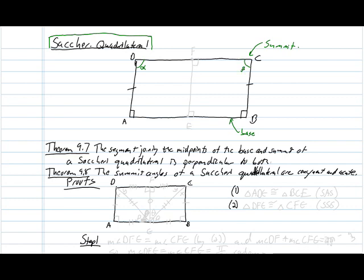For this I'm going to call them alpha and beta. You'll recall from the introduction that Saccheri intended to use these quadrilaterals to prove that the parallel postulate actually followed from the other axioms of Euclidean geometry. The intent was to show that these summit angles must be right angles. But it turns out when we assume the characteristic postulate of hyperbolic geometry, you not only don't arrive at a contradiction, but you end up concluding that these angles are congruent to one another and that they're acute. And that's what theorem 9.8 says.